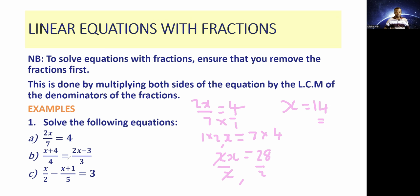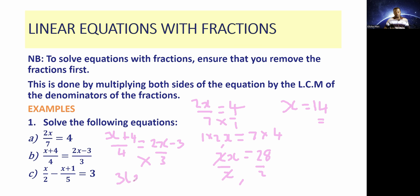Let's move on and attempt the second problem, which is (x + 4) over 4, equating to (2x − 3) over 3. Equally, the first thing that you have to do is get rid of the fractions. So these are algebraic fractions, so what you do is you cross-multiply. The 3 at the bottom, as a denominator, will be multiplied by the numerator diagonally. So we're going to have 3 multiplied by (x + 4), which is equal to 4 multiplied by (2x − 3).